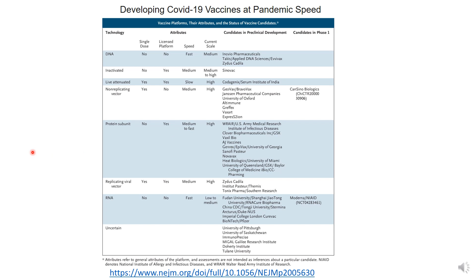The most novel platforms being tested are DNA or RNA-based platforms. These are likely not to be immunogenic in a single dose and they're not on a licensed platform yet, but the speed at which they can be produced is a significant advantage, and the scale at which they can be produced is also quite an advantage.